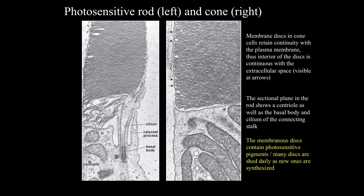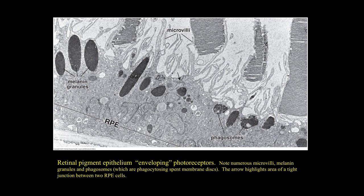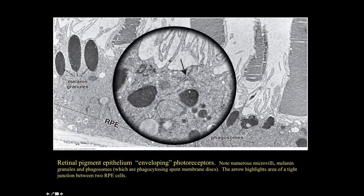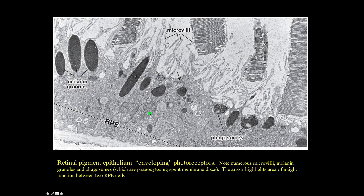Many membrane discs are shed daily and an equal number of new discs must be synthesized daily. Depending on the species, hundreds to thousands of discs can be shed and synthesized daily — in humans, probably a few hundred from the rods and cones. An electron micrograph of the retinal pigment epithelium shows microvilli extending from the apical surface and enveloping the photosensitive rods and cones, melanin granules, phagosomes functioning to phagocytize spent portions of the membrane discs, and a zonula occludens (tight junction) between two adjacent retinal pigment epithelial cells.